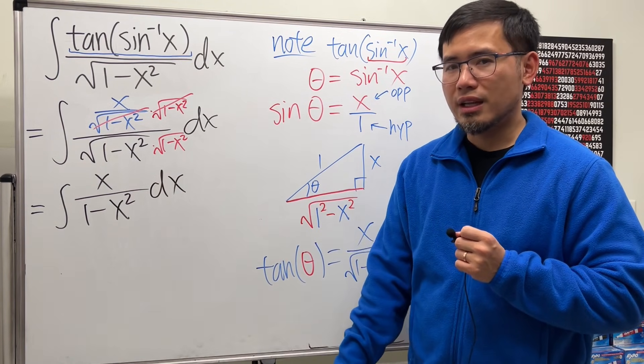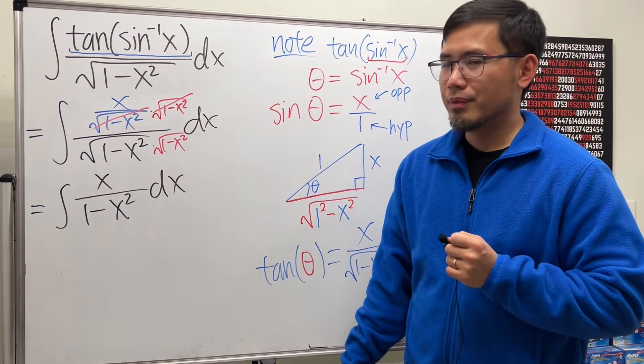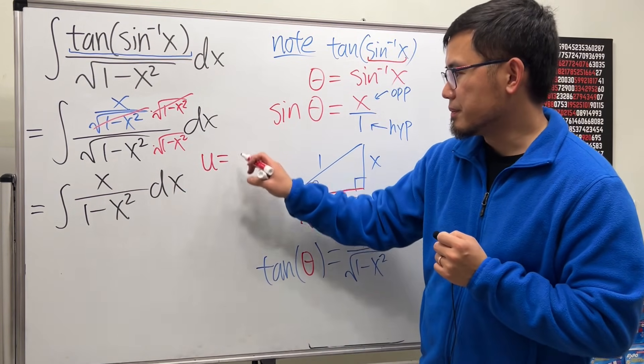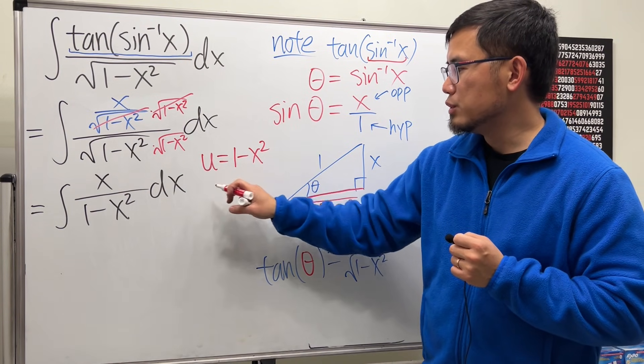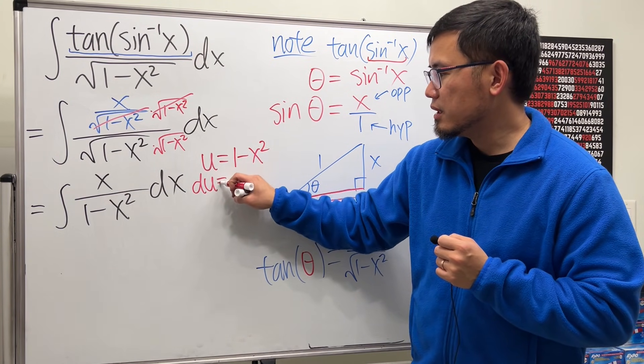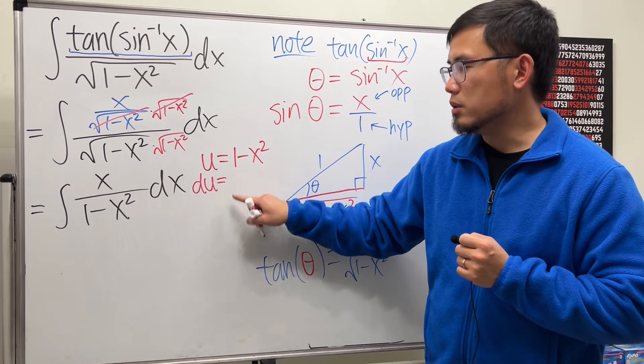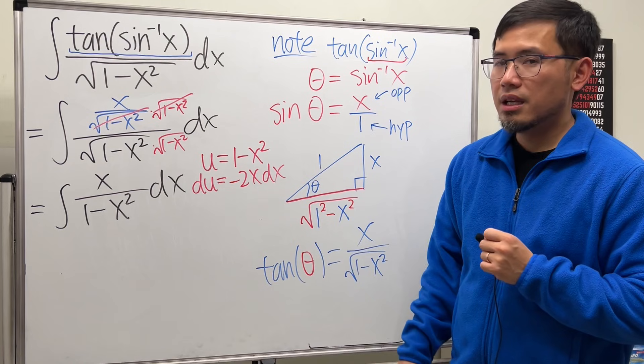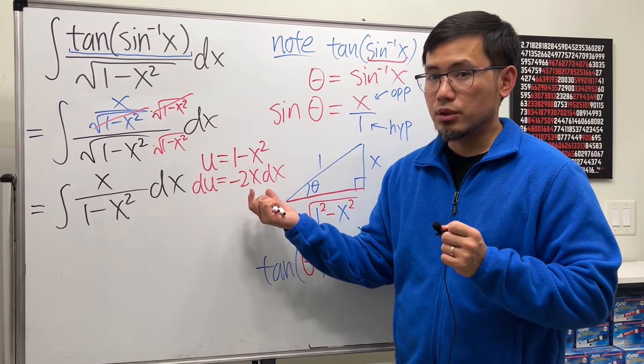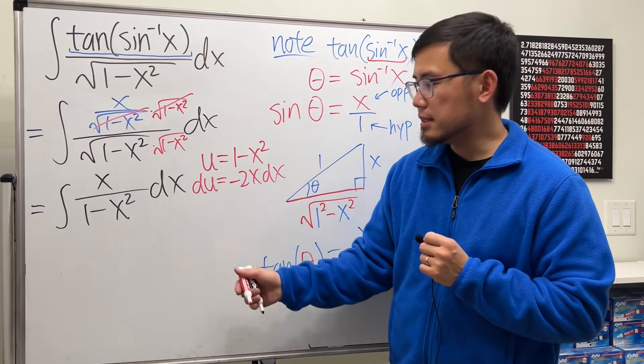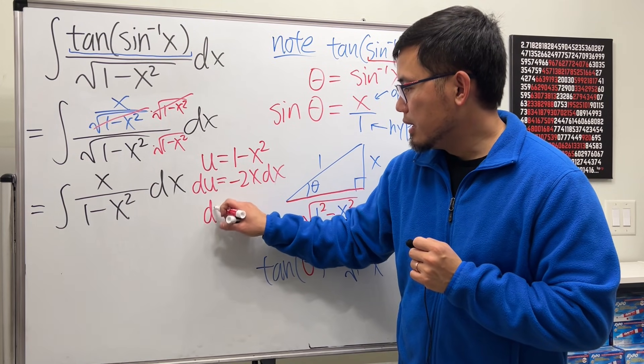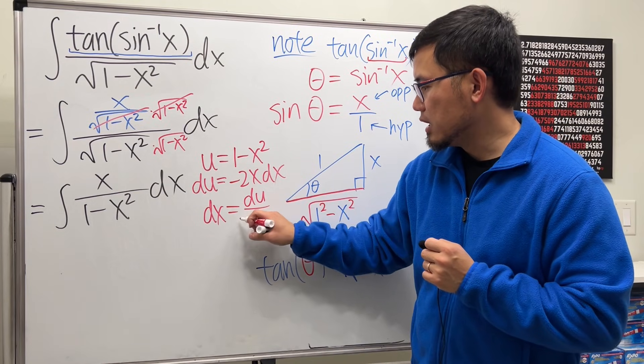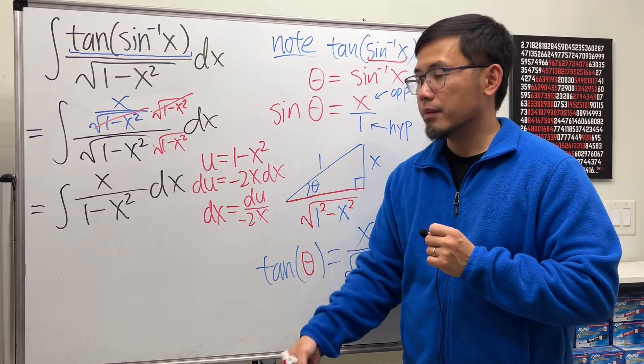And now can we just do a nice u-sub? Yes. Let u equal to what? The denominator, right. The whole thing, denominator 1 minus x squared. Because you can see when we differentiate this, the derivative of 1 is 0, the derivative of negative x squared is negative 2x dx. And I like to show people the cancellation, so let me divide the negative 2x on both sides. We see dx equals du over negative 2x.